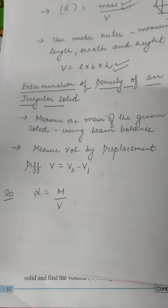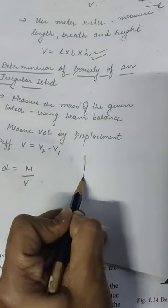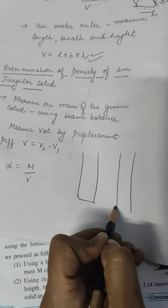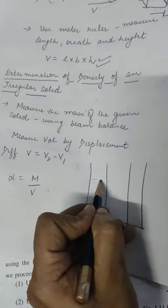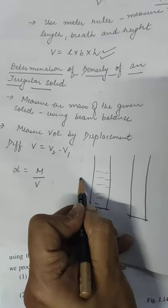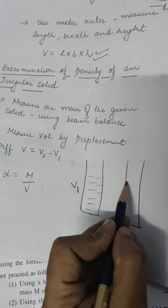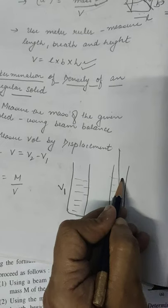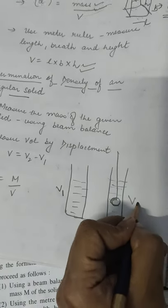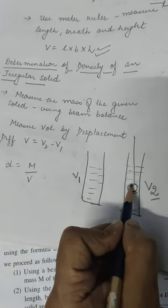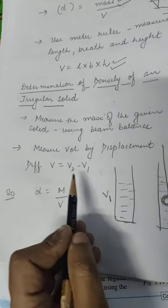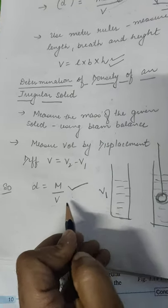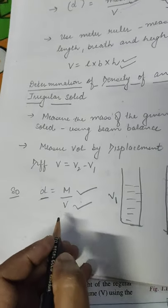Next, we are having determination of density of an irregular solid. To find the volume of an irregular solid, we use the displacement method — a very simple technique. We take one beaker, put water in that beaker. Let the volume of water be V1. Now put that irregular solid in — the water level rises up. Let that new volume be V2. The volume of the stone or irregular solid becomes V2 minus V1. Now you have its volume and you can get its mass by putting it on a beam balance.